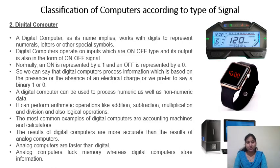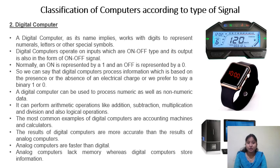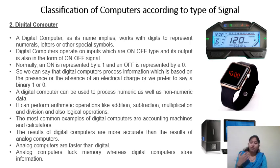The second type, according to signal, is digital computers. As the name suggests, digital computers give outputs in number or digit form. They work with digits, numbers, letters, and other symbols. Digital computers operate on inputs that are on/off type, and the output is also in on/off form, accepting only two binary values: one for on and zero for off.